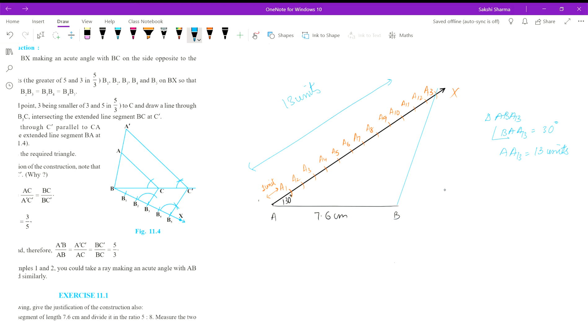The next step was to draw a line parallel to BA13 from A5. In order to do that, the angle from A13 was copied at this point, and then we draw a line right through that to obtain a parallel line to the base of the triangle. I hope you all are aware of how to copy an angle from one point to another point.